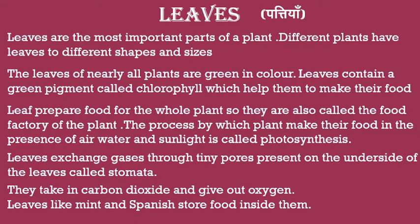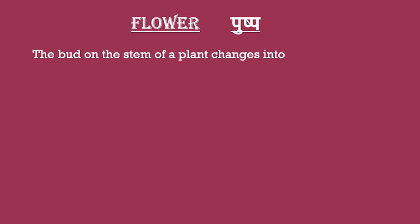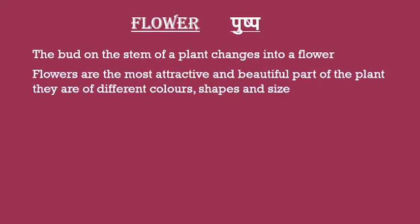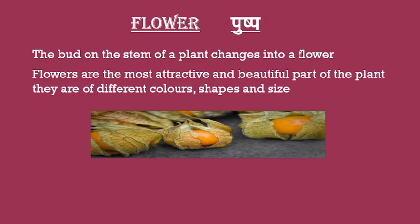Next one is flower — pushp. The bud on the stem of a plant changes into a flower. (Paudhe ke tane par jo kali hoti hai, phool mein badal jaati hai.) Flowers are the most attractive and beautiful part of the plant; they are of different colors, shapes, and sizes. A flower grows into a fruit. (Ek phool se phal banta hai.)